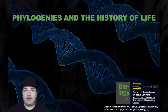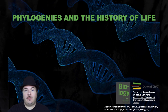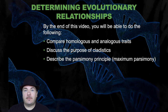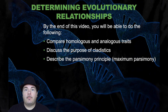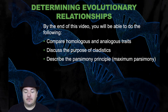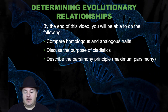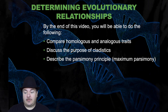Dr. Sage here, back with the second of three lectures discussing phylogenies and history of life. In this video, we're going to discuss determining evolutionary relationships. By the end of this video, you should be able to compare homologous and analogous traits, discuss the purpose of cladistics, and describe the principle of maximum parsimony.